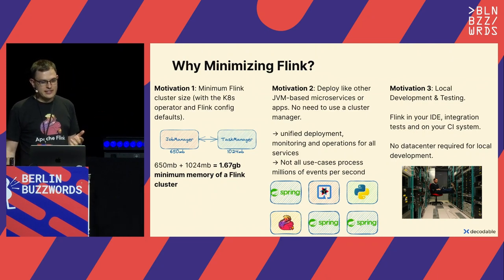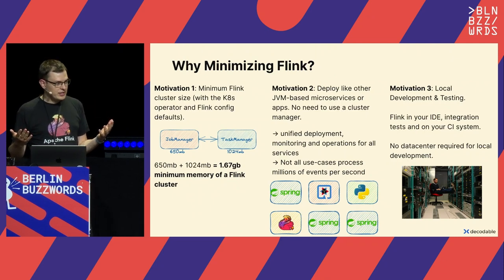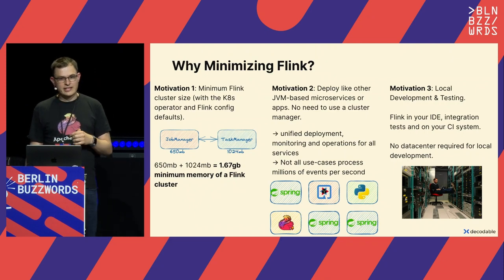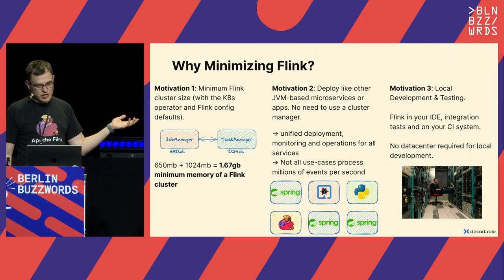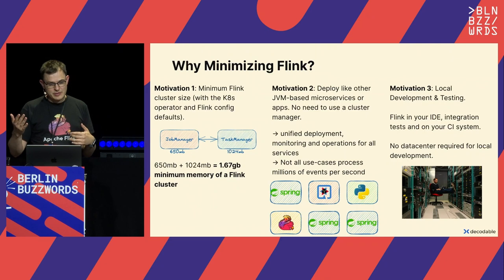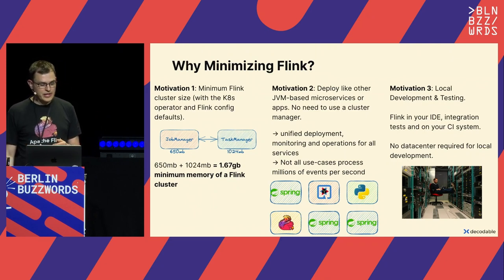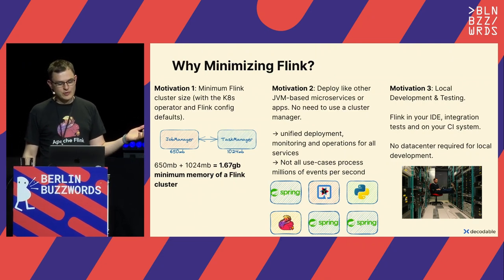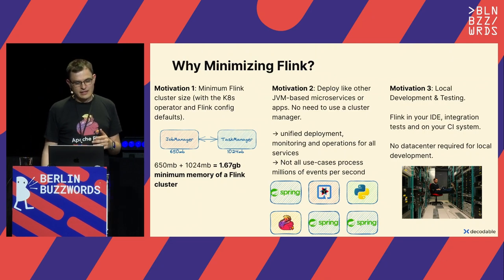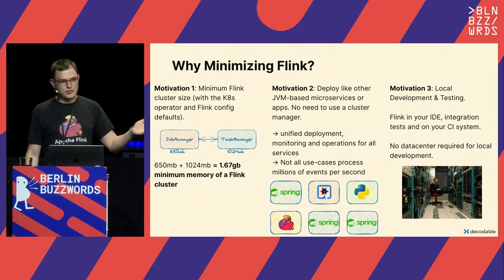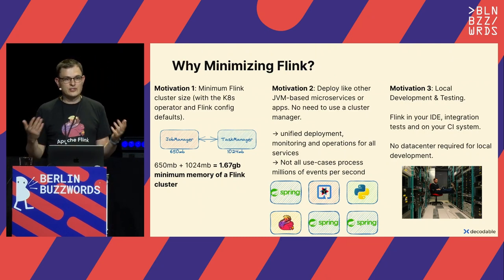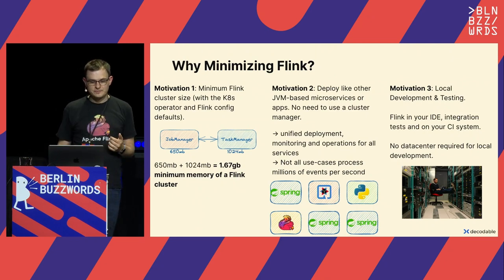The first motivation is that the minimum cluster size when you deploy a Flink cluster is roughly 1.7 gigabytes of memory using default configurations and the Kubernetes operator. The job manager needs about 650 megabytes and each task manager needs one gigabyte of main memory. We have customers with hundreds of streams at fairly low throughput, and launching 100 Flink clusters would not be feasible — too high costs. That's why we looked into reducing the resource footprint as much as possible.